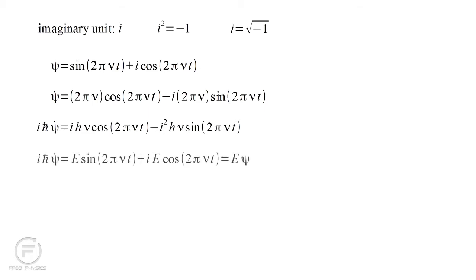The two pi's cancel, h times nu is energy e, and minus i squared is minus minus one equals one. The resulting real part is e times the sine, and the imaginary part is i times e times the cosine. So i h-bar psi dot equals e psi.